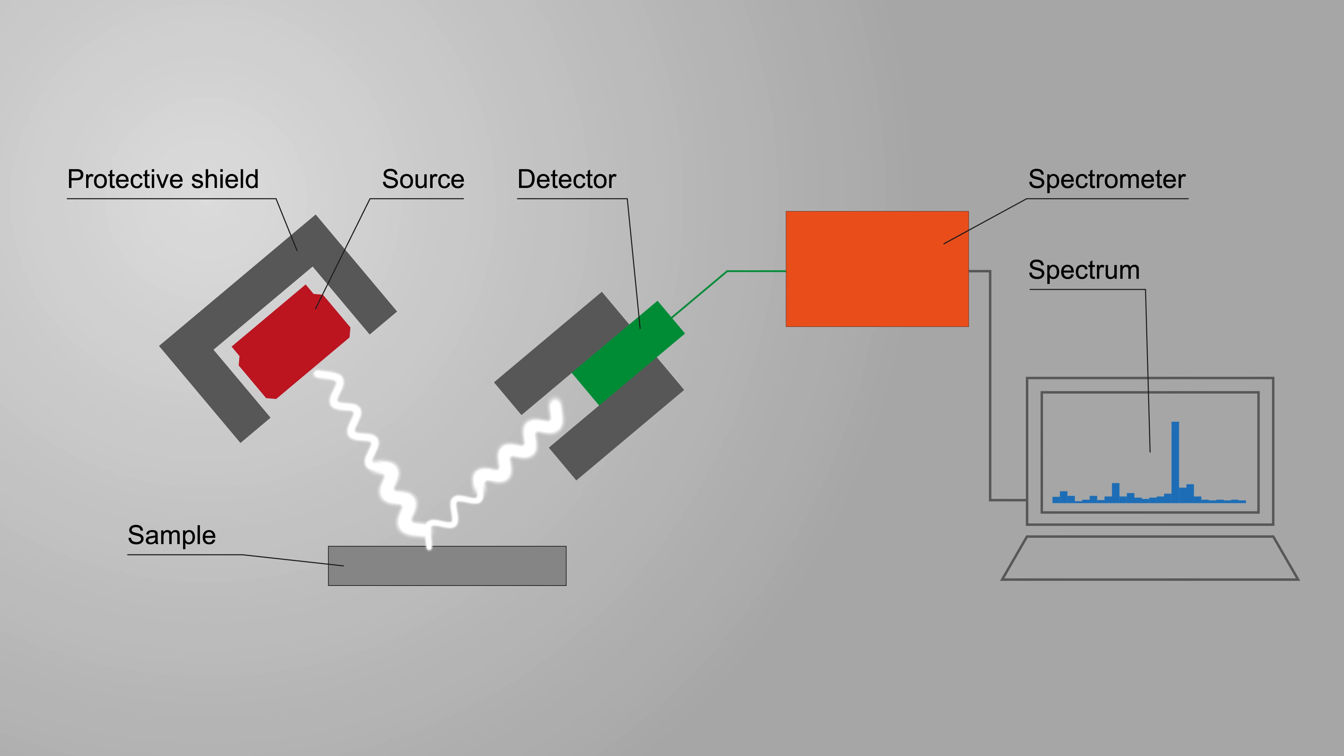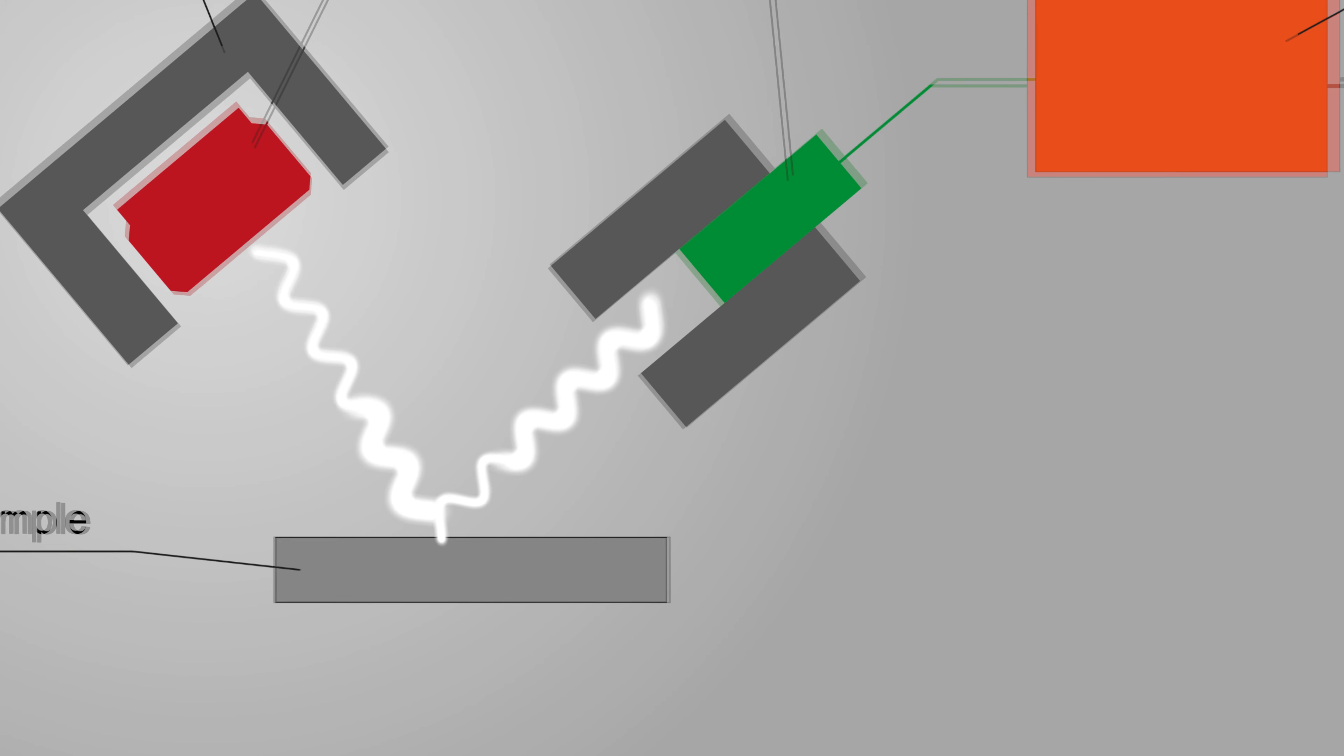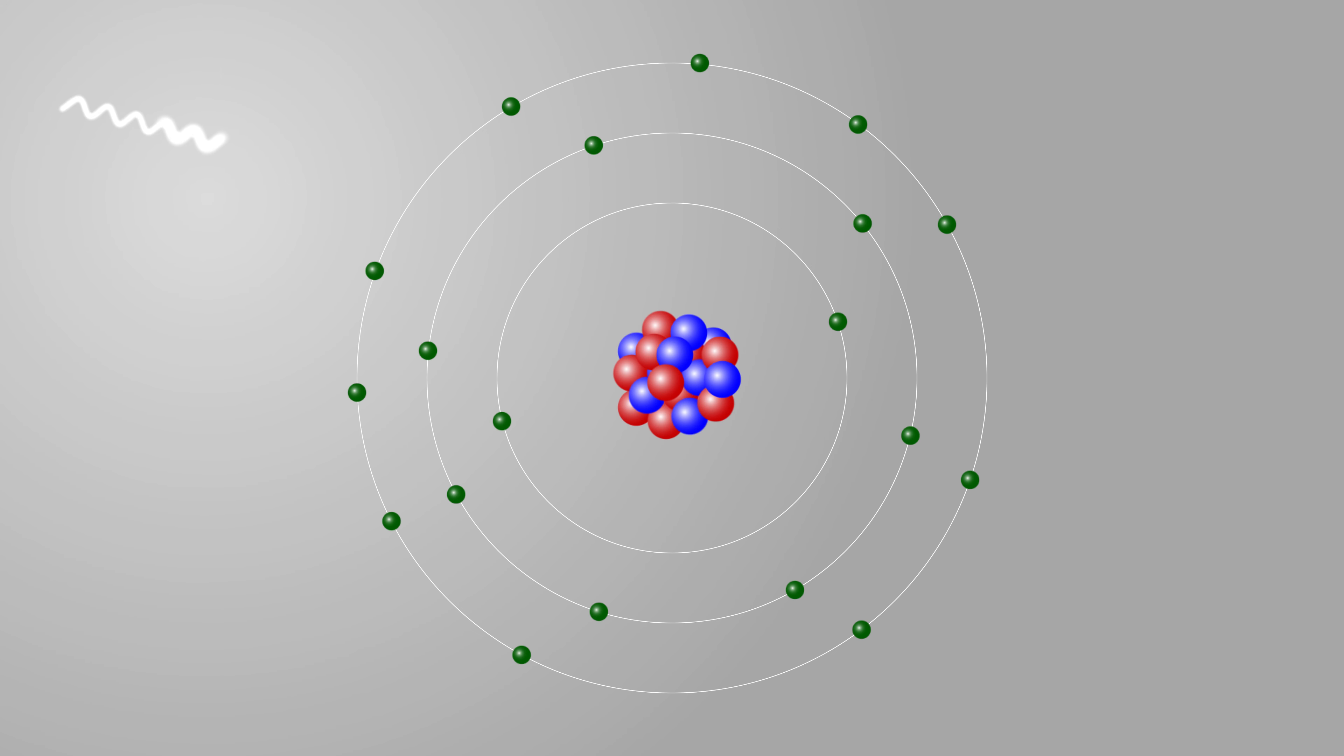The principle behind x-ray fluorescence analysis is so-called induced fluorescence. If you irradiate stable atoms with photons, they can get excited.